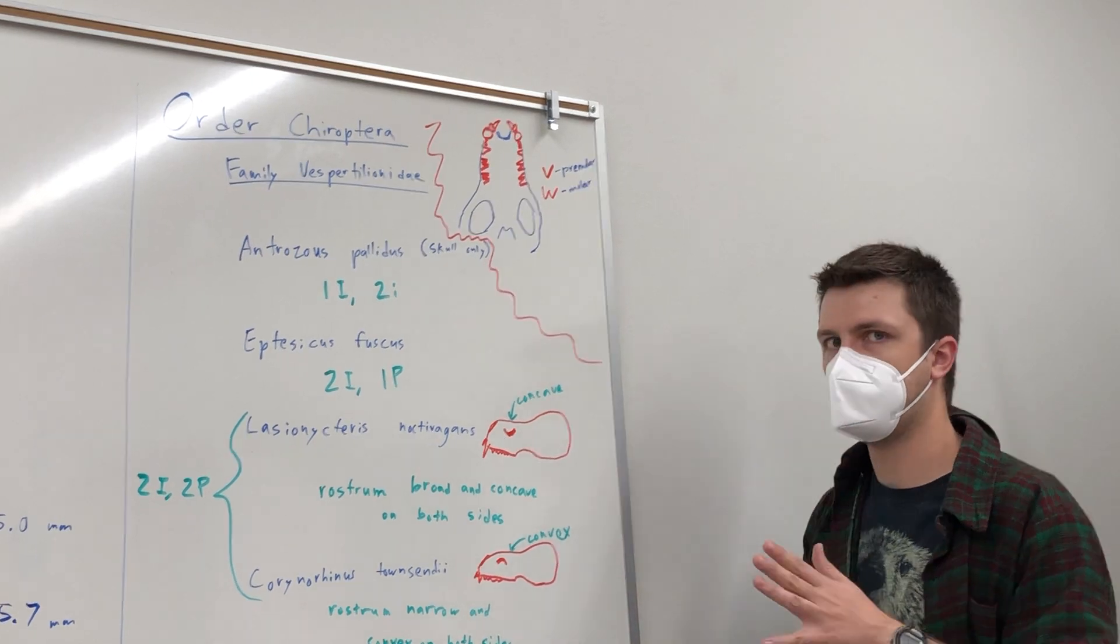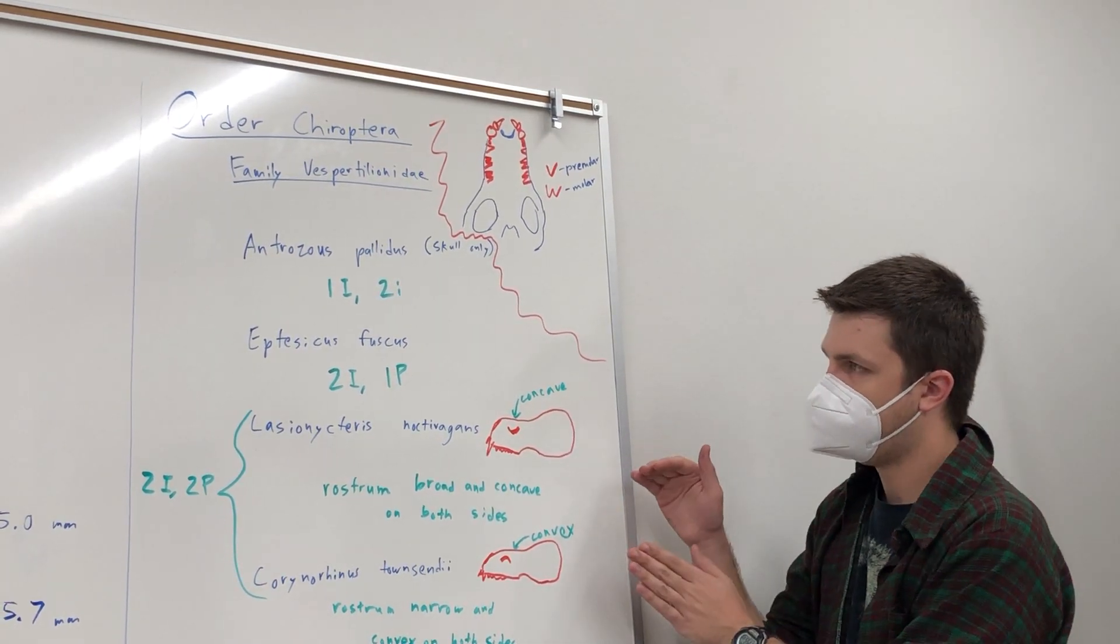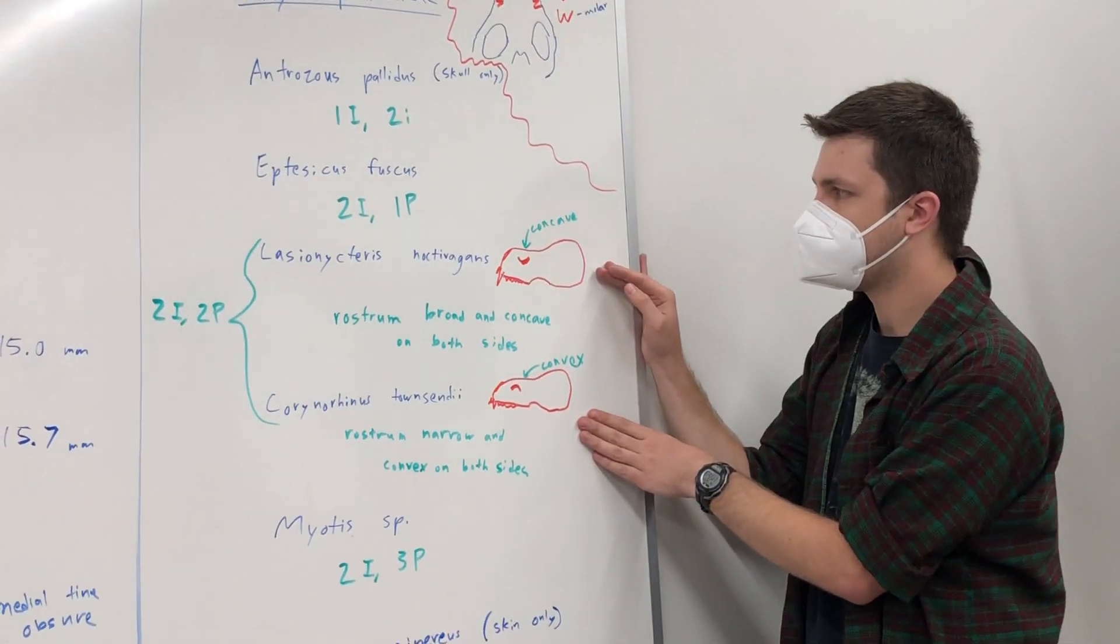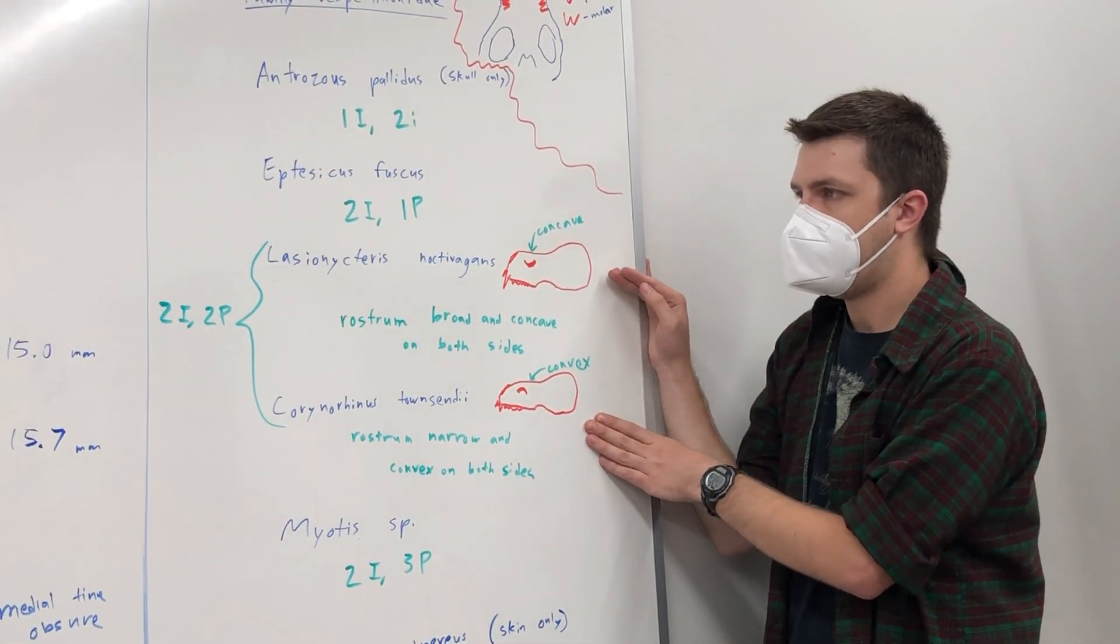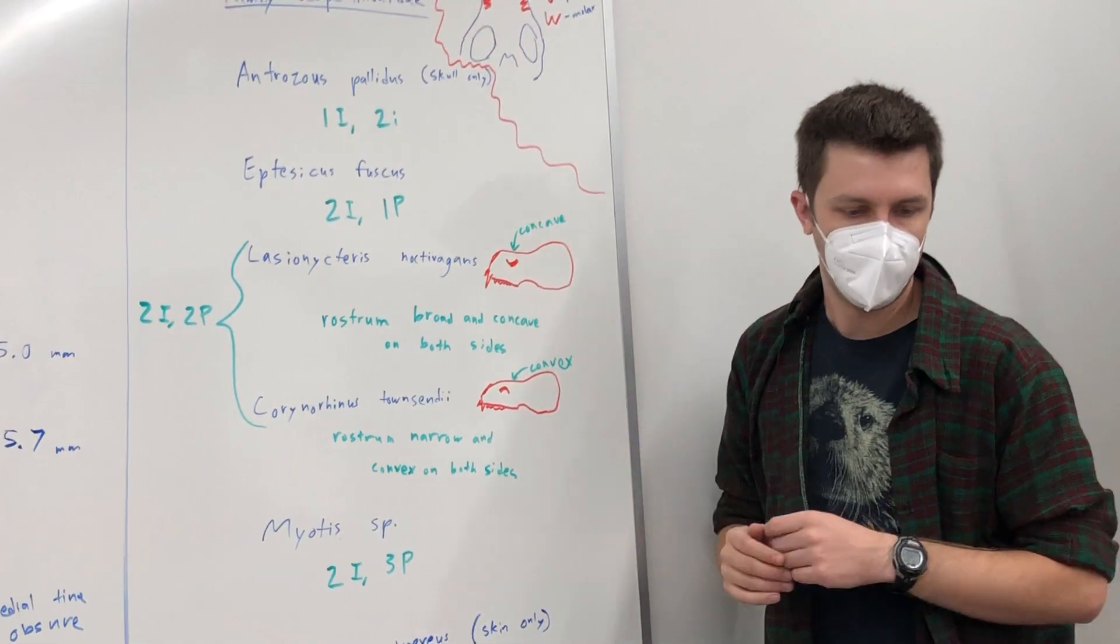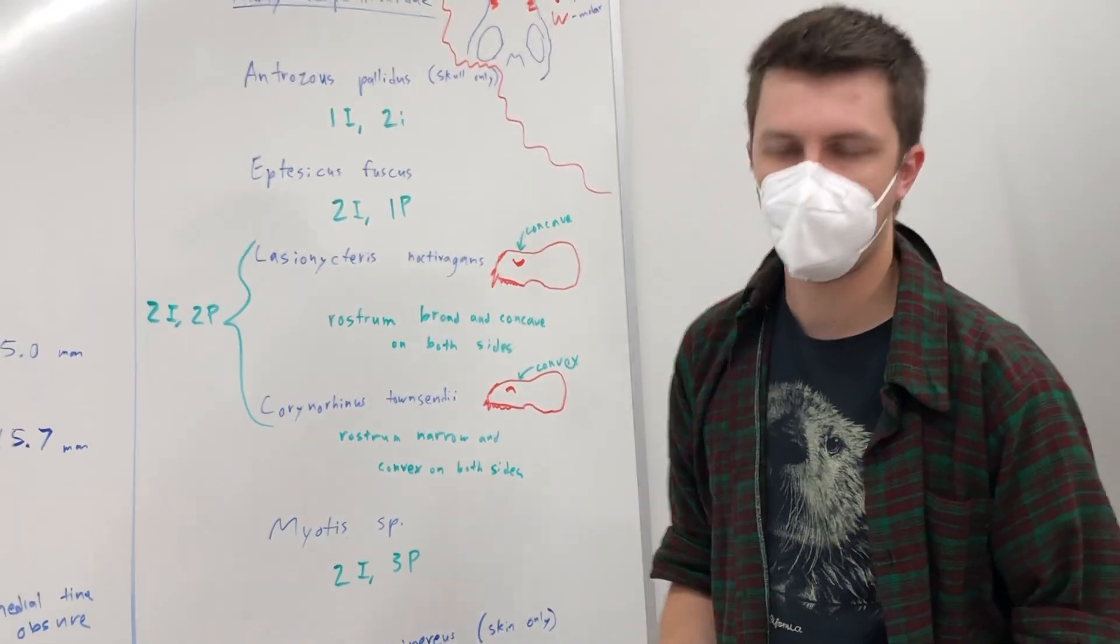So then, last thing, these two here, Lasiurus, Corynorhinus townsendii, they have the same dental formula. What do we do? Well, according to the key, there are a few different ways to do it.